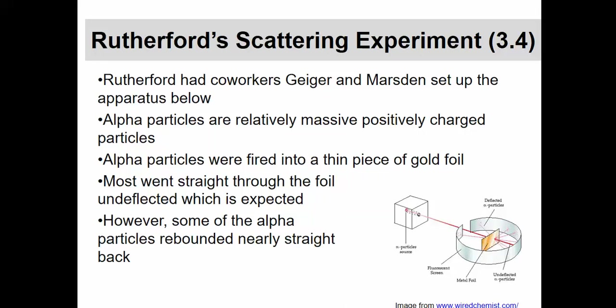What he found was most of them went straight through the foil undeflected, which is kind of what you might expect if it's mostly empty space. But some of the alpha particles rebounded nearly straight back. If you think about the plum pudding model where it's all evenly distributed, you might expect things to go straight through.